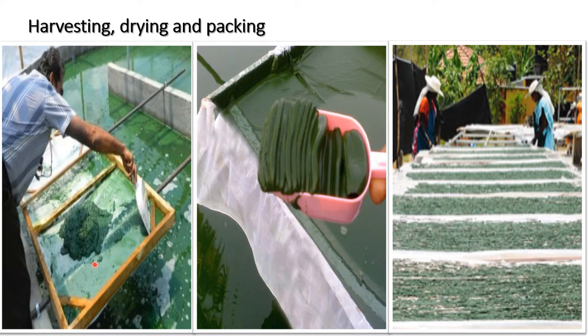Algae can be harvested using micro screens, by centrifugation, by flocculation, or by froth flotation. Interrupting carbon dioxide supply can cause algae to flocculate on its own, which is called auto-flocculation. Chitosan, alum, and ferric chloride are chemicals used as chemical flocculants.